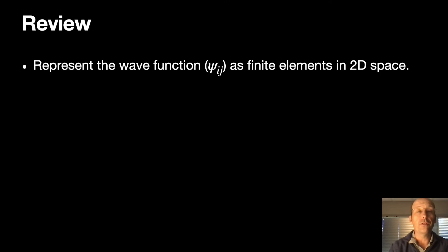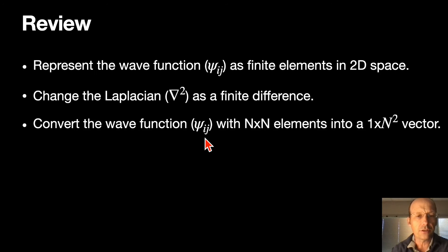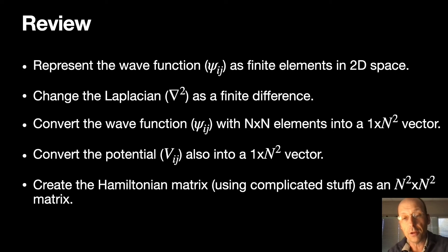So let's review. We're going to represent the wave function as finite elements in 2D space. Psi i,j, whatever you want to call it. We change the Laplacian to a finite difference. Convert the wave function with n by n elements, a matrix of elements, to a one by n squared. So that's put them all in a list. Convert the potential into a list.